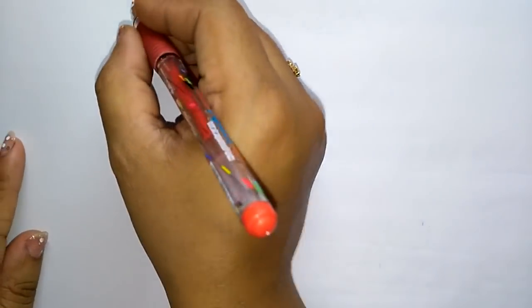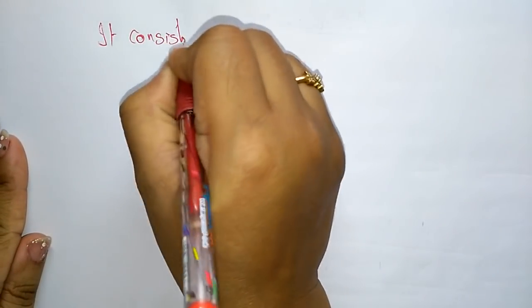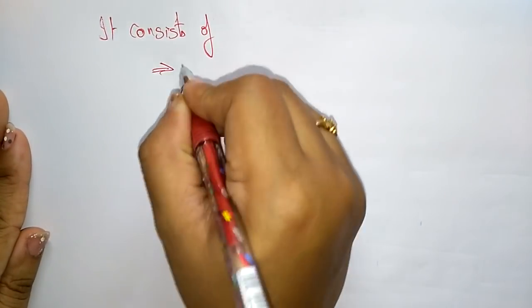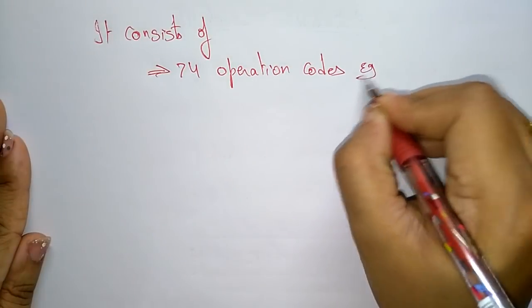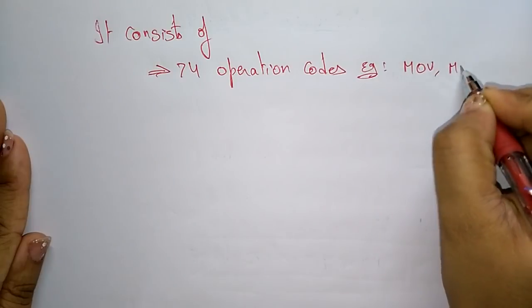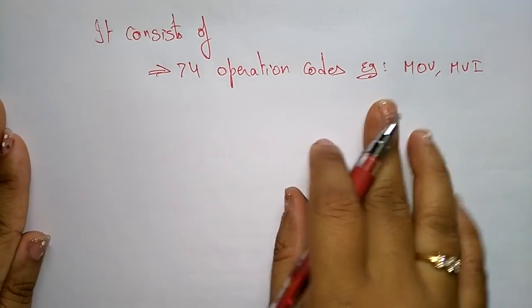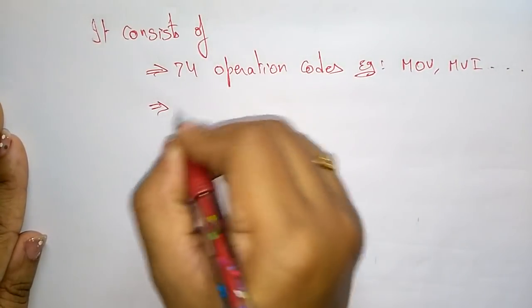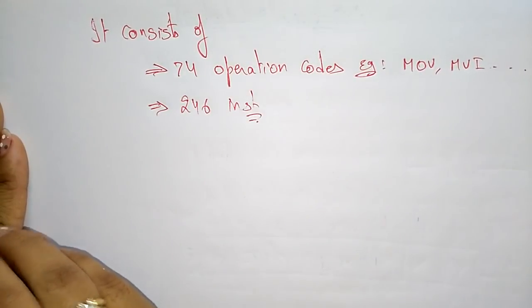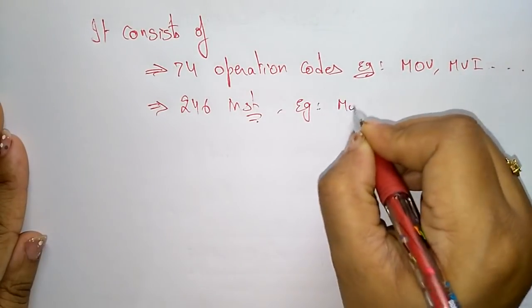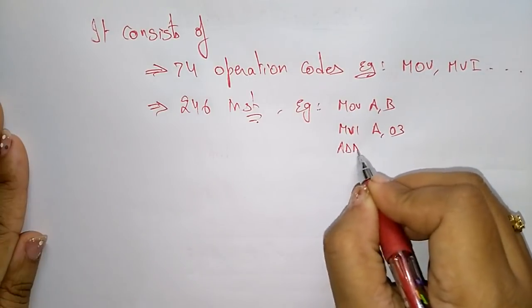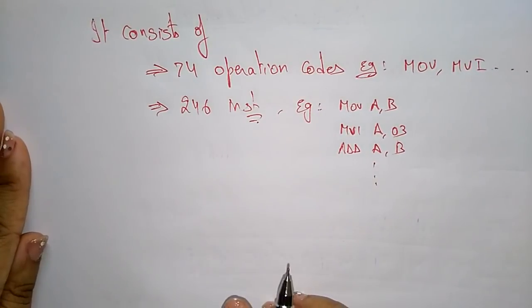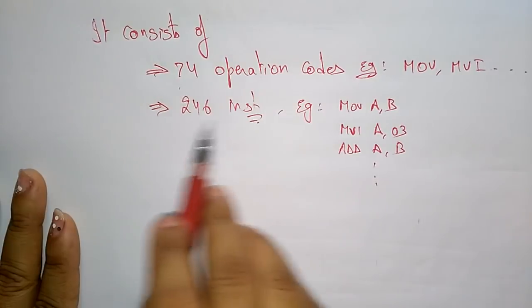The 8085 consists of 74 operation codes in total. Operation codes are nothing but the operations to be performed — like move, move immediate, add, subtract, and so on. So it has 74 operation codes and 246 instructions. You can write up to 246 types of instructions — like MOV A,B; MVI A,03; ADD — so the 8085 consists of 74 operation codes and 246 instructions.